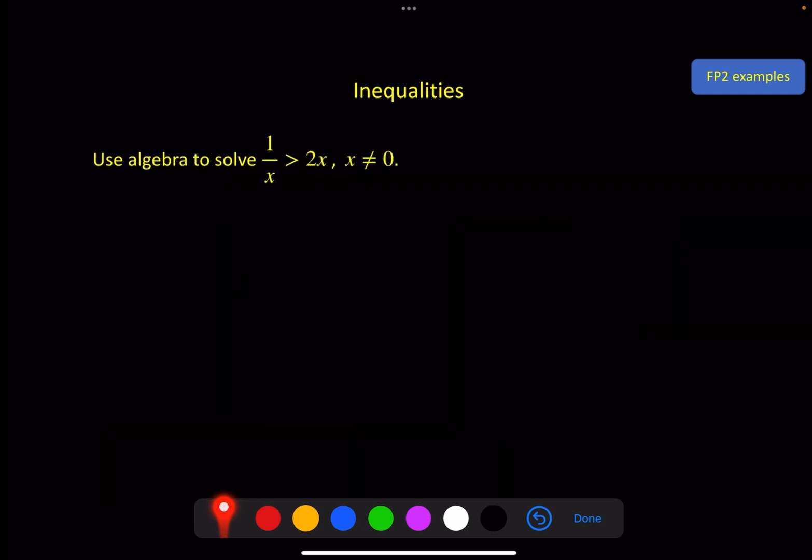A couple of examples, then one final note and a final example. Here we've got 1/x > 2x, take the denominator, square it, put it on both sides, so on the left it cancels once, and on the right we get a cubic. Rearrange and factorize, which gives us 2x² - 1.